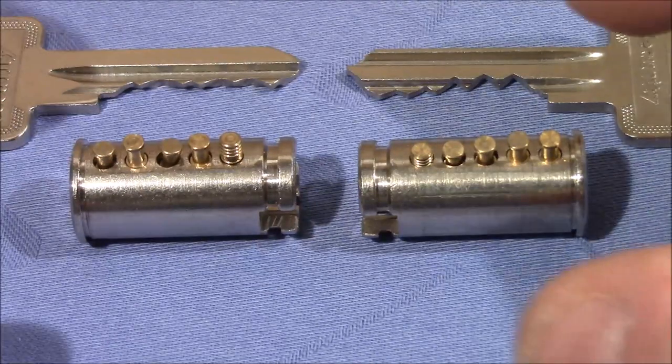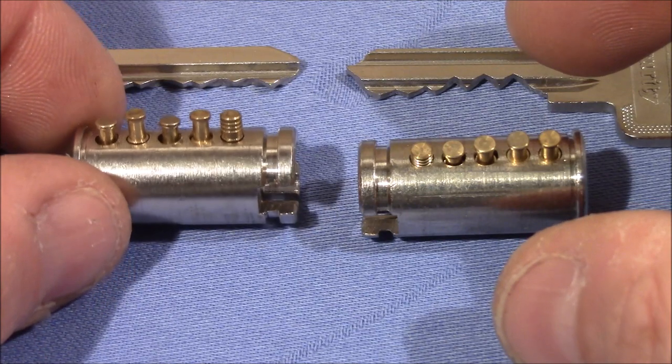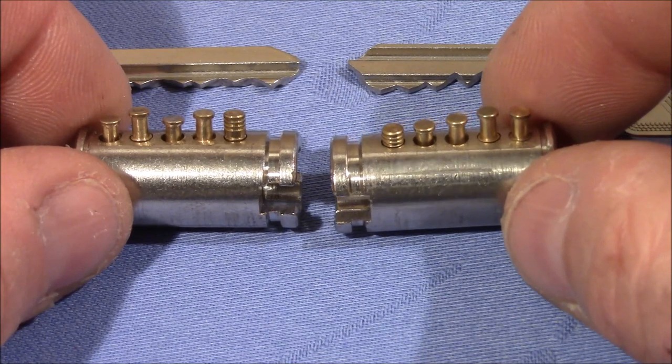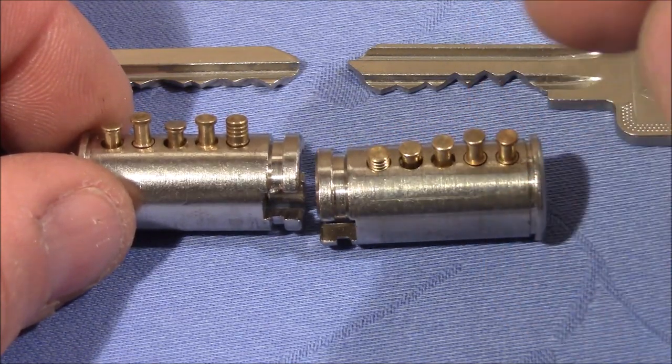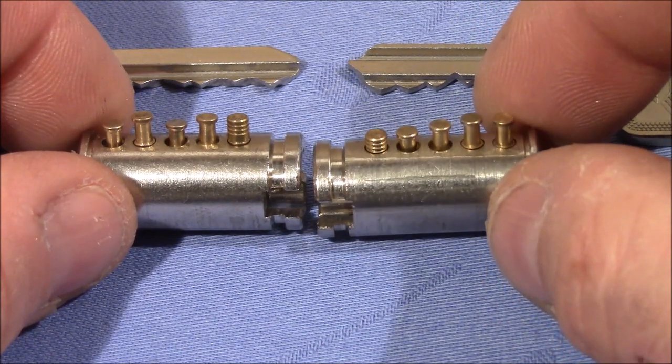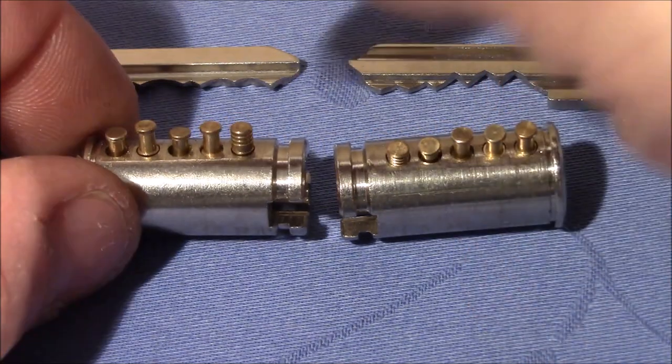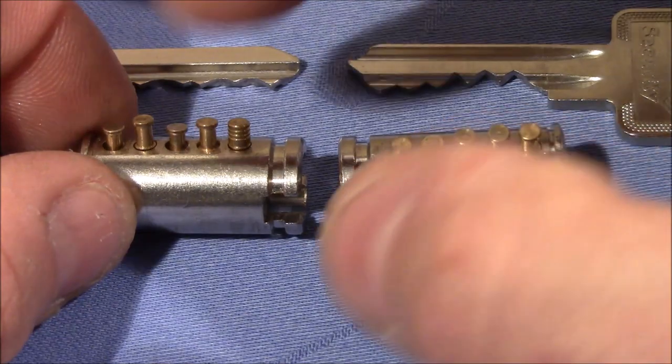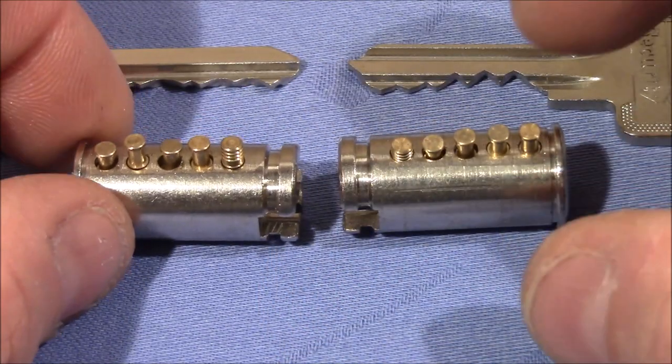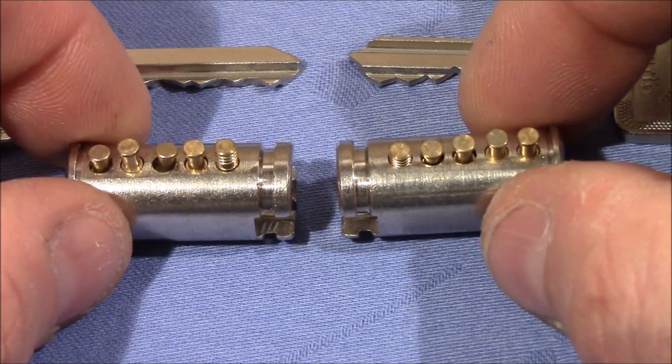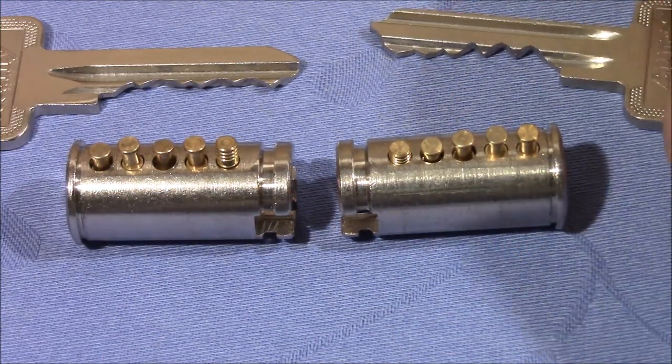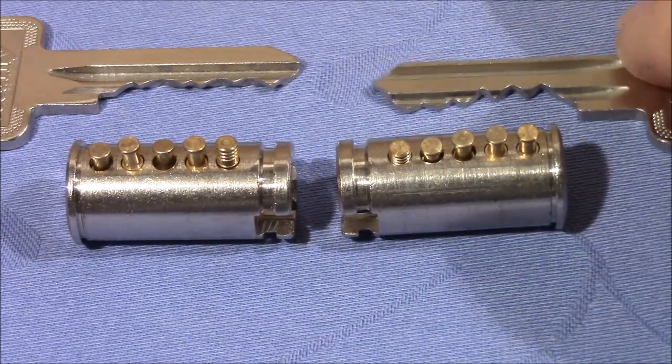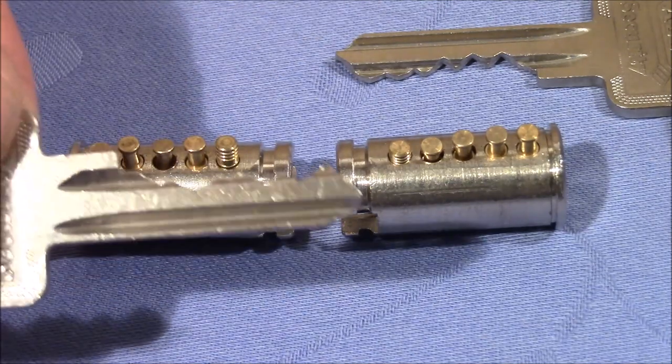So here we can see both plugs of this lock repopulated with the key pins and the drivers. We can see that almost all drivers are effective spools. Maybe one and two here are not as effective as they could be. I mean maybe number two here on this side is also not that effective. But although these spools do not go in all the way, they have a tapered end so they show a little bit of special behavior. On the right side you can see the bitting as it came originally with this lock, and on the left side that's the newly pinned side.